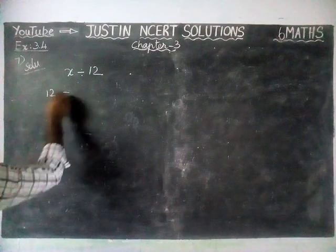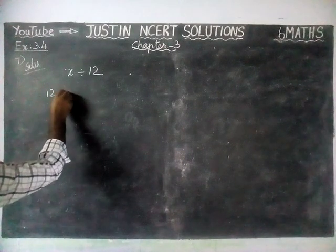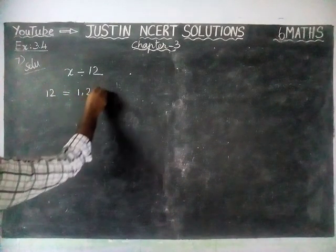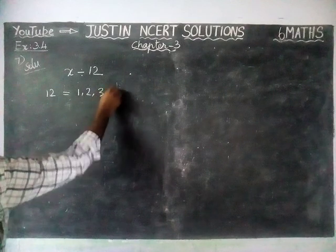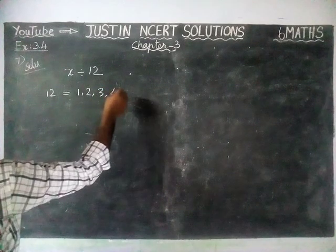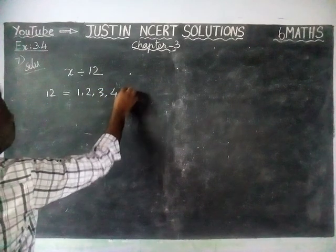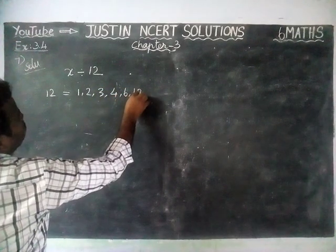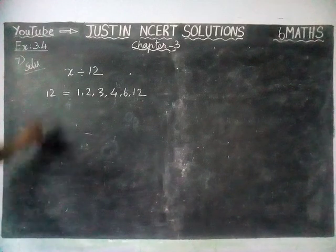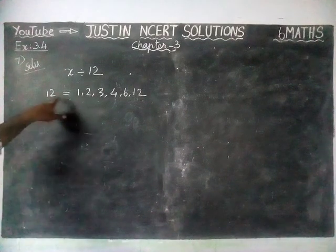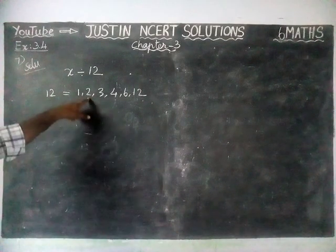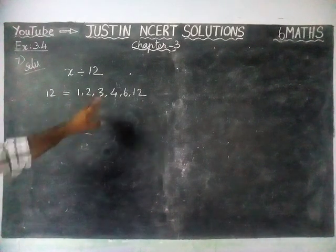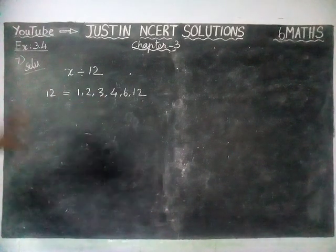We are going to find factors of 12. The factors of 12 are 1, 2, 3, 4, 6, and 12.